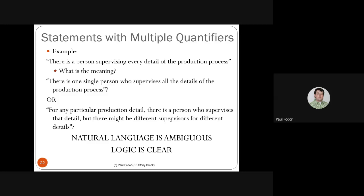Natural language is ambiguous. In logic, quantifiers are executed from left to right, so such a sentence has a single unambiguous meaning — in this case, one single person supervises all details. In English, many people actually use that sentence to mean the second interpretation, that every production detail is supervised by some person. That's why natural language isn't used for logical proofs.